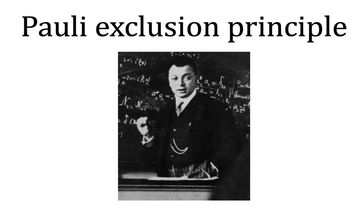If two fermions were in the same state — for example the same orbital with the same spin in the same atom — interchanging them would change nothing and the total wave function would be unchanged. The only way the total wave function can both change sign as required for fermions and also remain unchanged is that this function must be zero everywhere, which means that the state cannot exist. This reasoning does not apply to bosons because the sign does not change.